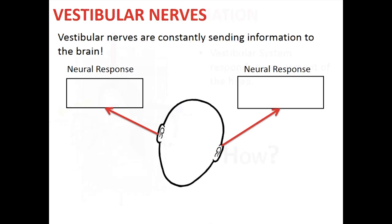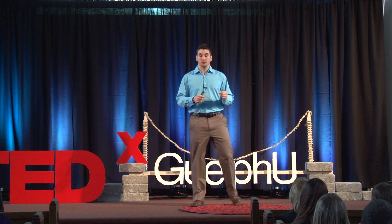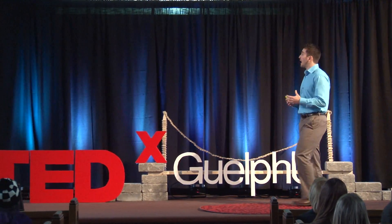These nerves are unique — they're not simply on-off switches, but they are constantly sending information to the brain, even as we're just standing still or sitting still. This property allows us to get information from the vestibular nerves to the brain when either we increase or decrease the firing of the neural impulses sent to the brain. It is the changes in those neural firing patterns that provides us information about how our head is moving.